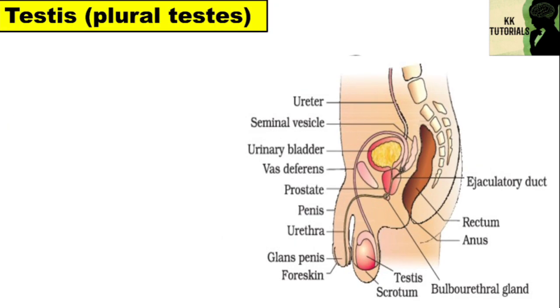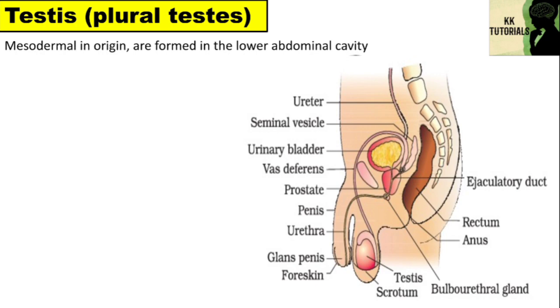Now let's talk about testes. From this image, you will come to know the location of testes. The testes are mesodermal in origin and are formed in the lower abdominal cavity.